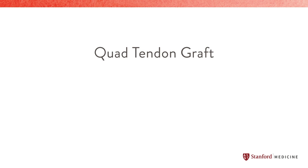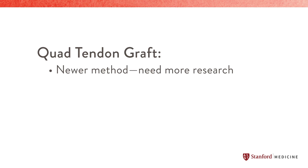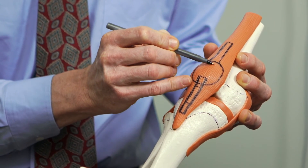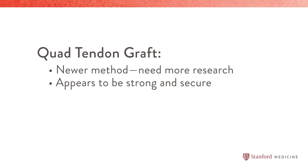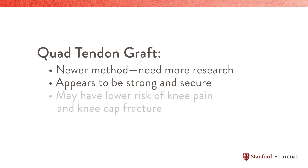Surgeons are developing new techniques to increase the size of hamstring grafts to lower the risk of rupture. The quadriceps tendon graft has become more popular over the last 10 years, and early research suggests it is a very good treatment option. Like the bone-tendon-bone graft, it comes from the kneecap, but from the upper part. It appears to be a very strong, secure graft, though we do not have as much long-term research data. It may be associated with less front-of-knee pain, a lower risk of kneecap arthritis, and the risk of kneecap fracture is thought to be pretty low. More research is still needed.